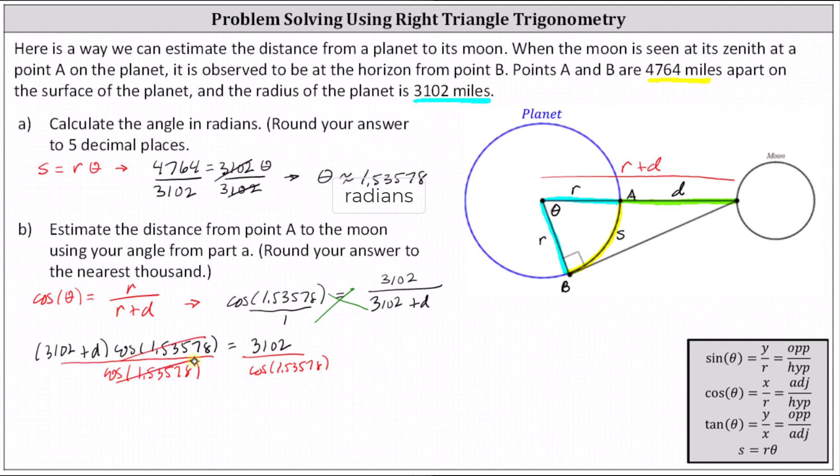Simplifying, we now have 3,102 plus D equals 3,102 divided by cosine of 1.53578 radians. And the last step to solve for D is to subtract 3,102, which gives us D equals 3,102 divided by the cosine of 1.53578 radians minus 3,102.